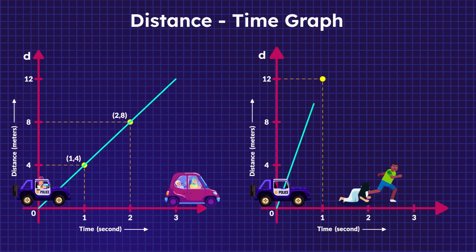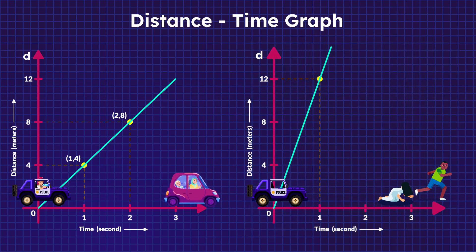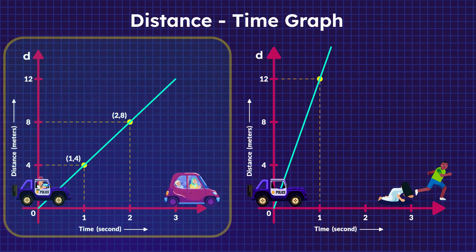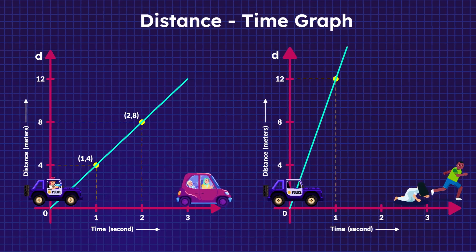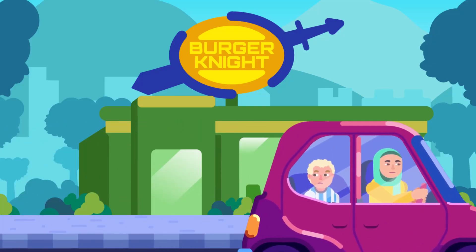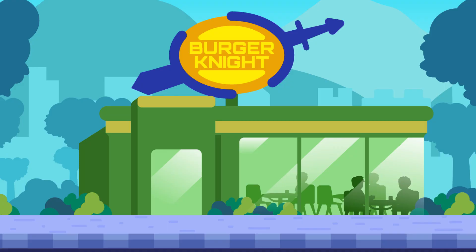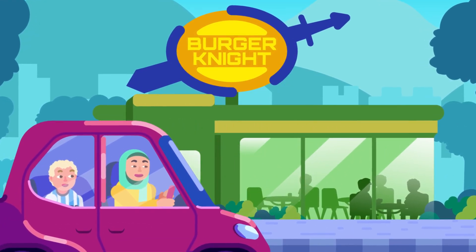A steeper slope indicates a higher speed, because more distance is covered per unit time. Conversely, a shallow gradient indicates a slower speed. Since the upward slope shows that you move forward, now you can tell what a downward sloping line indicates — the decreasing distance over time means you're moving backward, approaching the point of reference.